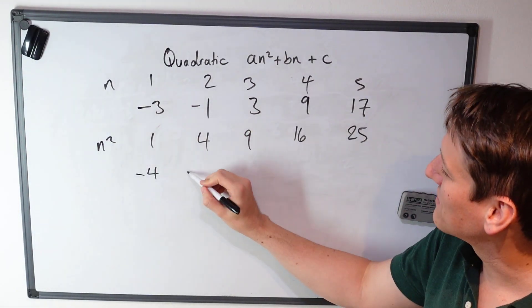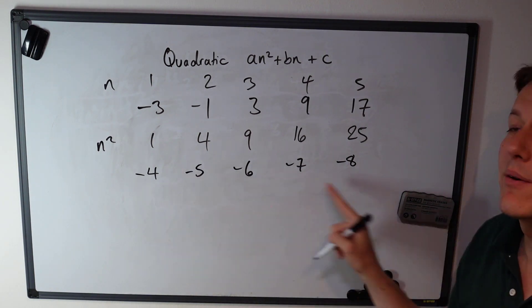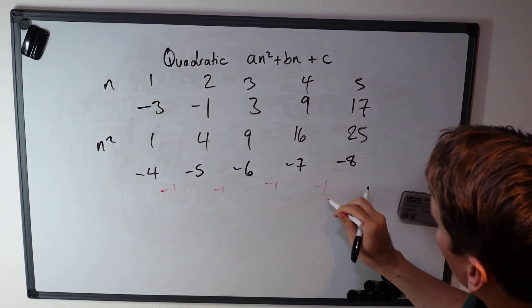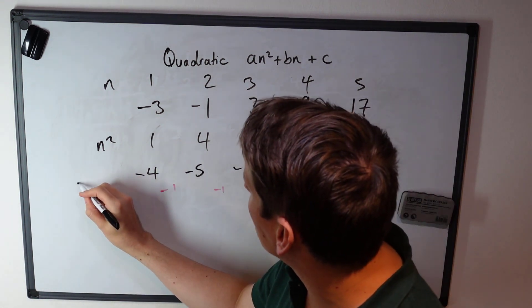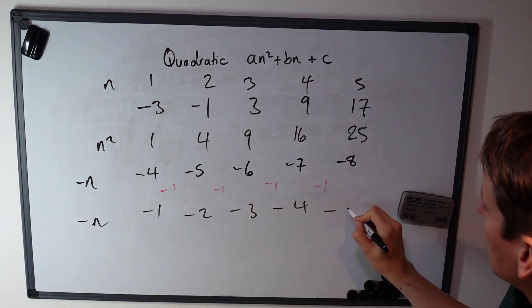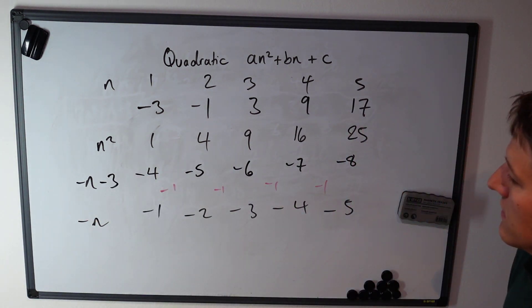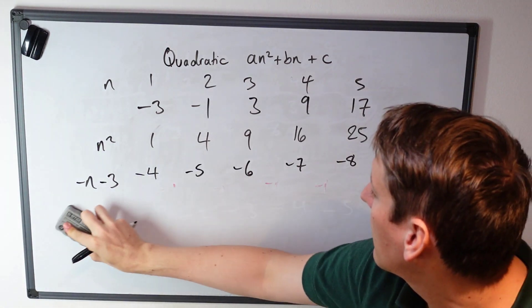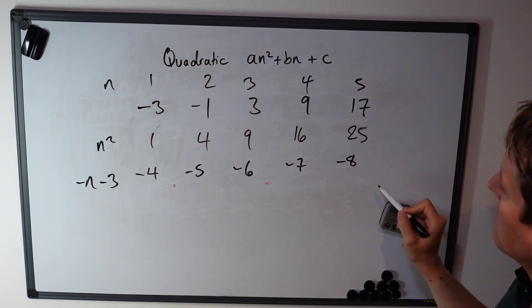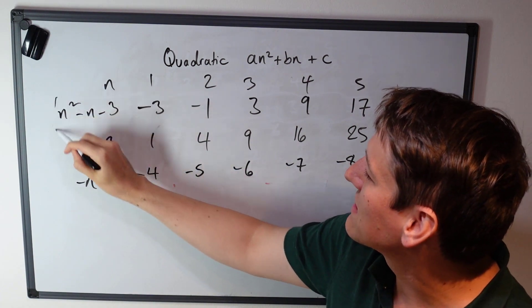I'm going to take the original sequence and subtract the n², so I get -1 minus 4 is -5, 3 minus 9 is -6, 9 minus 16 is -7, 17 minus 25 is -8. Now I get this nice linear sequence, and this time the differences for this linear sequence are -1. This is going down in units of 1, so this sequence is going to be -n minus something. If I just had the sequence -n, that would be -1, -2, -3, -4, -5. This sequence is always 3 below -n, so this one must be -n minus 3. That means the nth term definition for my original sequence is n² minus n minus 3.